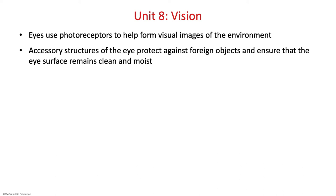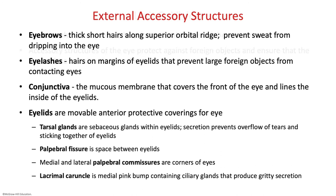For the quiz next week, focus on the spinal cord structures — there probably won't be questions about the plexuses. Now we'll move on to Unit 8, which covers Special Senses: the anatomy of the eye and the anatomy of the ear. Your eyes use photoreceptors to help form images of the environment. We'll start with accessory structures on the external side of the eye that protect against foreign objects and ensure the eye surface remains clean and moist. The terms to focus on are in the green boxes in your lab book.